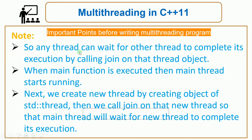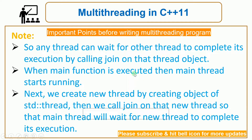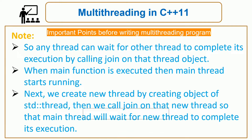If the main thread does not call join, it will not wait for the new thread to complete execution. If the main thread completes and exits first while the new thread is still running, a crash can occur — because the new thread was created from the main thread but the main thread has already exited. So always call join on any new thread you create, to wait for it to complete before the program exits.